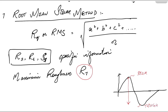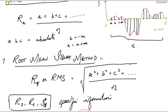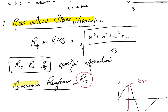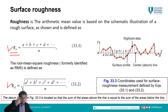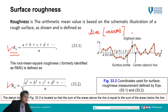So we have arithmetic mean method Ra, root mean square Rq, and maximum roughness Rt. Ra is defined internationally by ISO and is usually adopted internationally. The unit for surface roughness is microns — micrometers — and it is also expressed in micro inches.